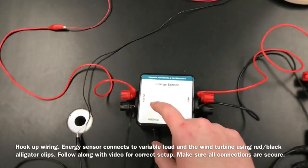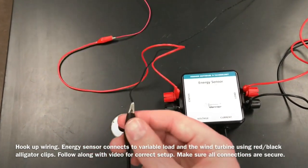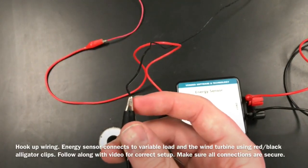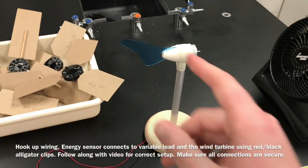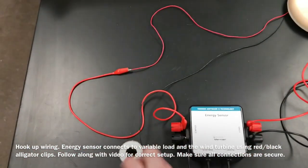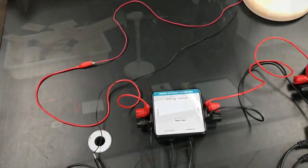And then on the other side here for our source, I took another set of alligator clips and I plugged these right onto the metal end of our turbine. So again, you're going to hook up the turbine using alligator clips to the energy sensor. Red to red, black to black.